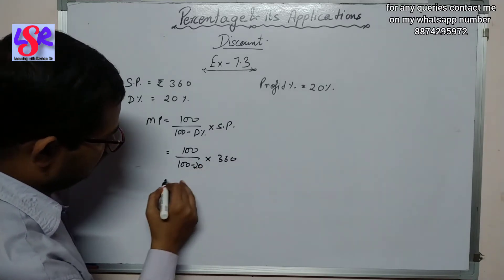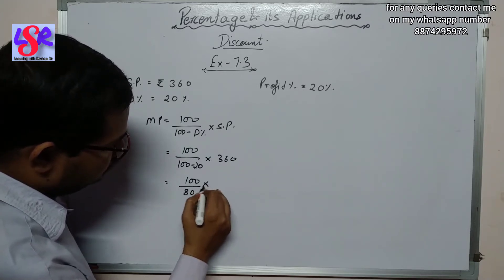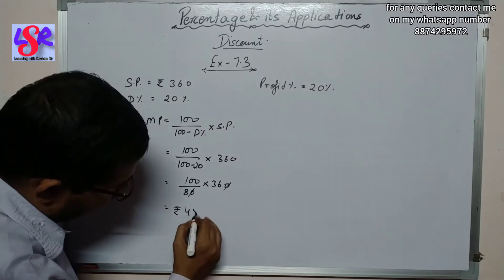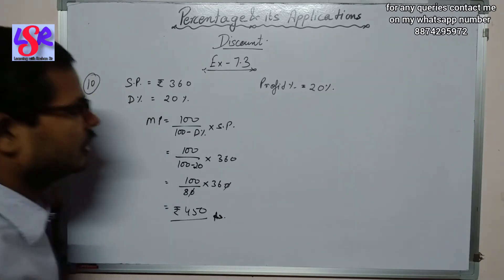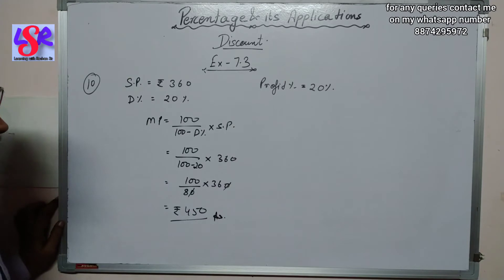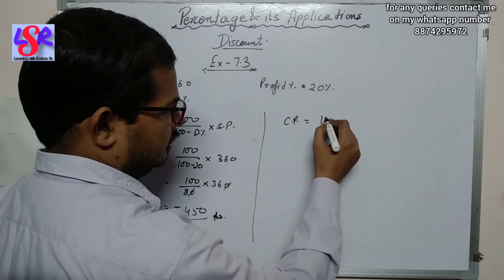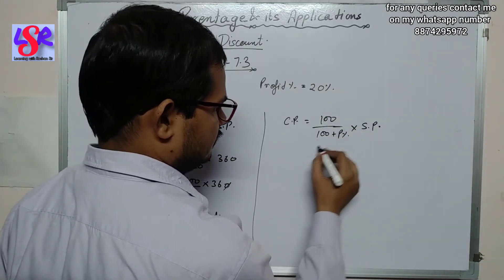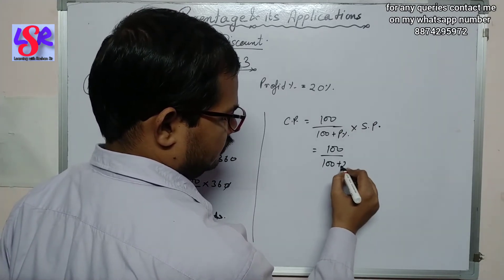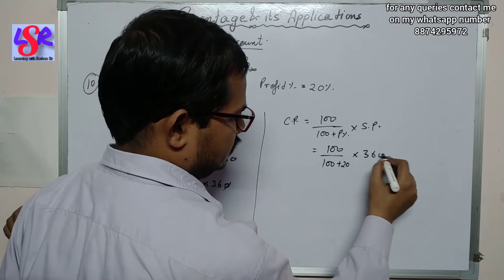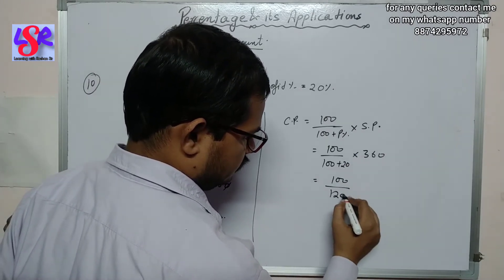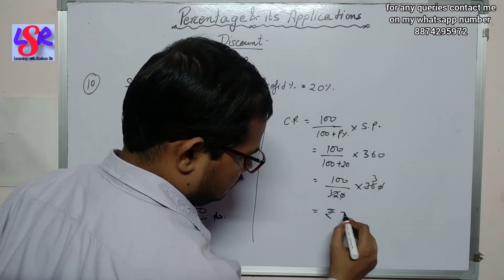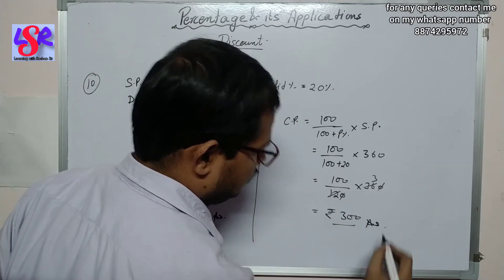Mark price = 100 / (100 − discount%) × SP = 100/80 × 360 = rupees 450. Then cost price = 100 / (100 + profit%) × SP = 100/120 × 360 = rupees 300. So the marked price is rupees 450 and the cost price is rupees 300.